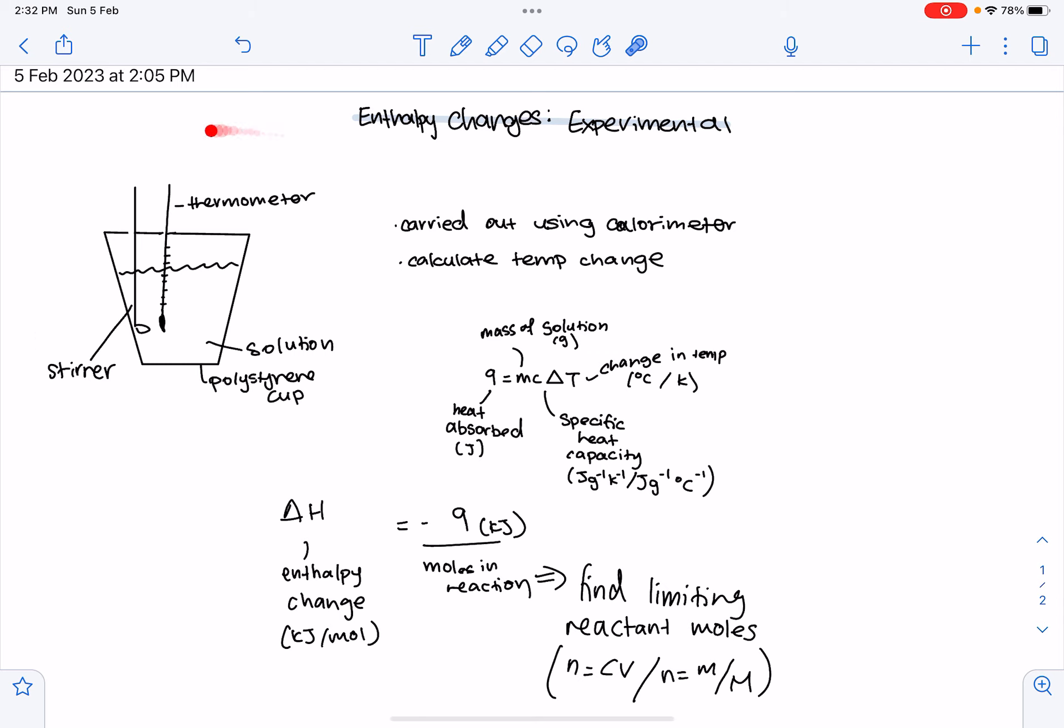So, this is the apparatus. As you can see, there's a polystyrene cup, which is a good heat insulator and reduces heat loss to surroundings. And then the expanded polystyrene cup also absorbs very little heat itself, so there's no need to calculate the heat absorbed by the calorimeter. The other apparatus would be a stirrer to mix the two reactants, and then a thermometer to calculate temperature.